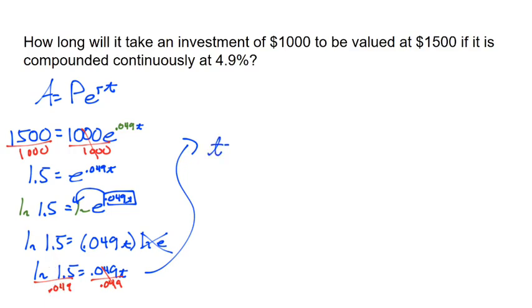And then to get our final t value, I just got to do those calculator button pushes right there. And it looks like the amount of time that takes is going to be roughly 8.275 years. Several problems, all the same structure, should be pretty straightforward.